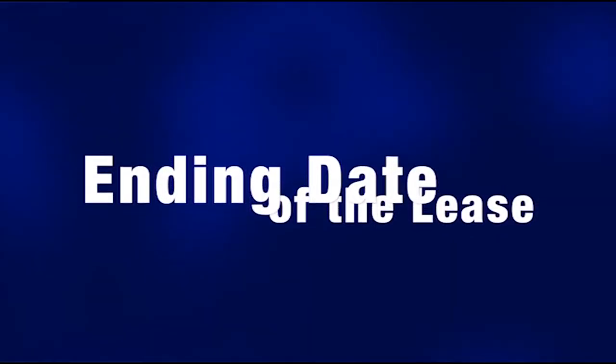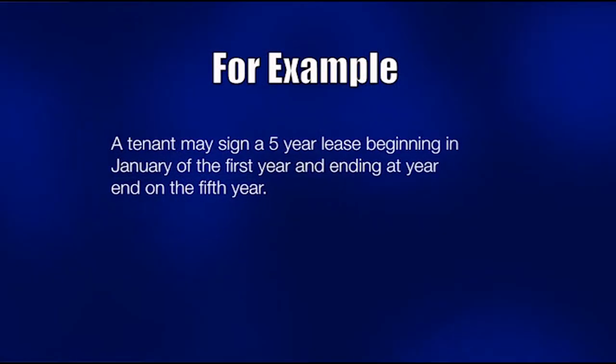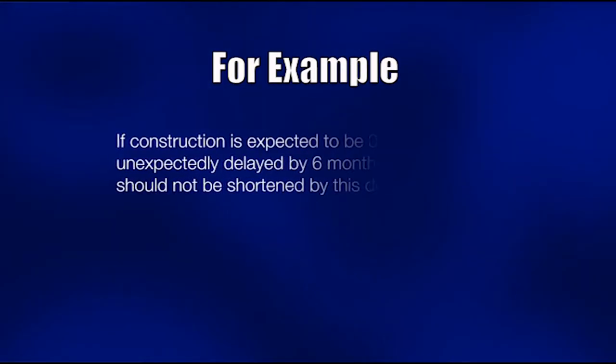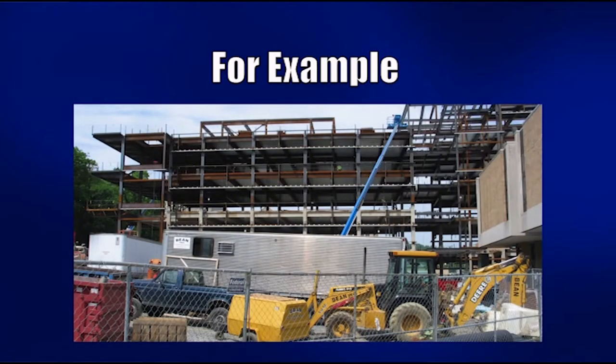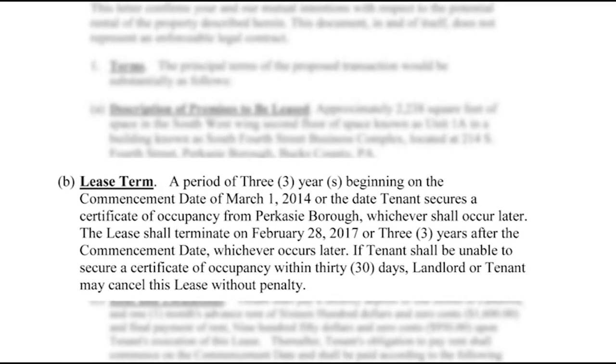The ending date of the lease should be carefully structured. If predicated on substantial improvements, the end date should be adjusted to avoid short-changing either party. A lease may be written for a period rather than a specific date — for example: 'The lease shall commence when proposed improvements are substantially complete but not later than December 1st, and shall continue for a period of 60 months.' This avoids a situation where unexpected construction delays shorten the effective lease term.